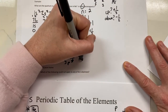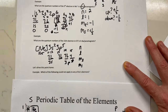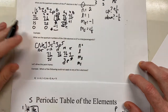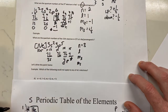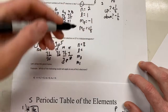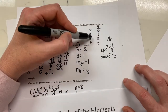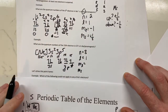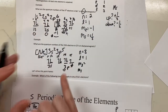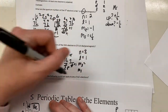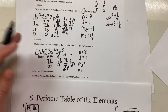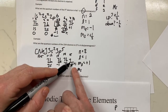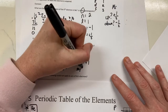Remember we're looking at N, L, M sub L, and M sub S. Our N is going to be 3 — which orbital level it's in. Our L: S is 0, P is 1, D is 2, F is 3 — so here our L has to be 1. Our M sub L — remember the center one gets a 0, to the right gets a positive, to the left gets a negative — so our M sub L has to be positive 1. Our M sub S just asks if it's up or down; in this case it's up, so it's positive one half.